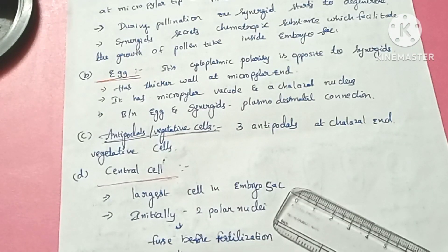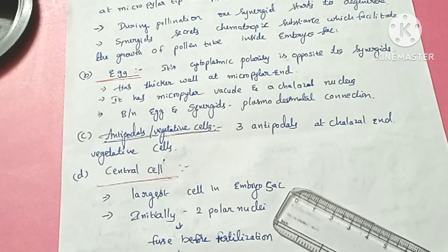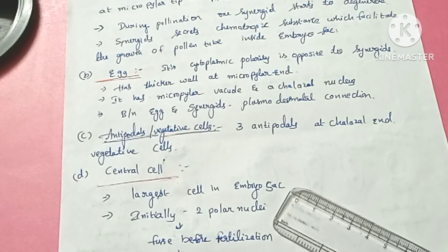The three antipodals are vegetative cells — they are not part of the reproductive structure. They provide nourishment to the developing embryo sac.